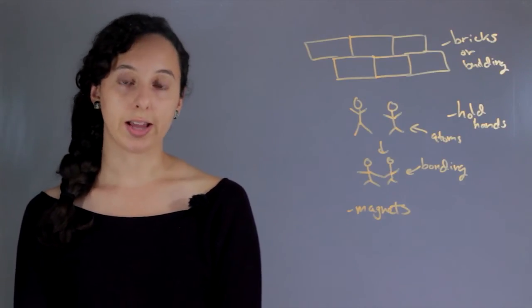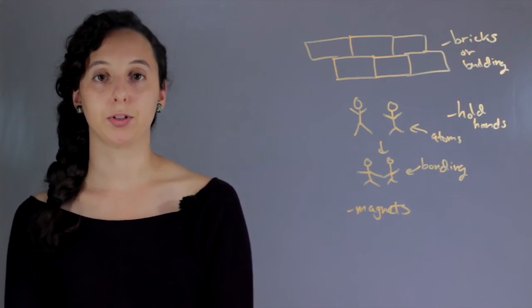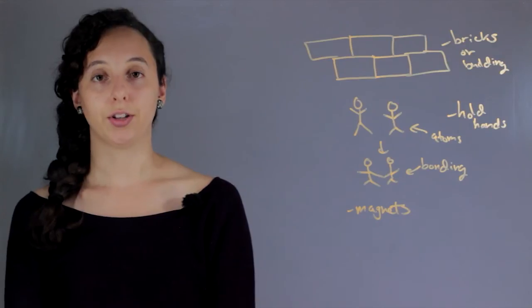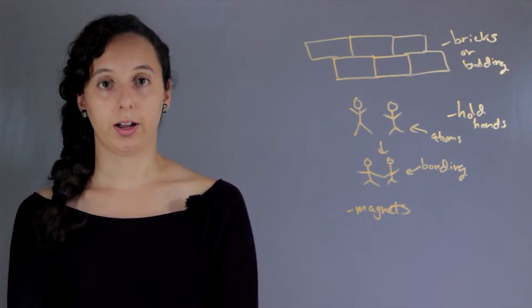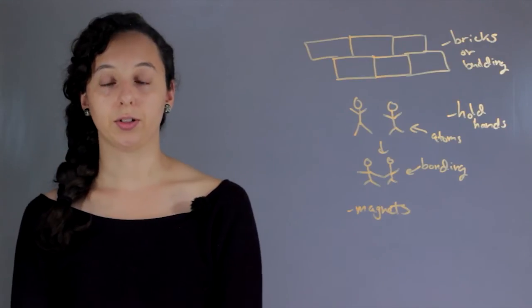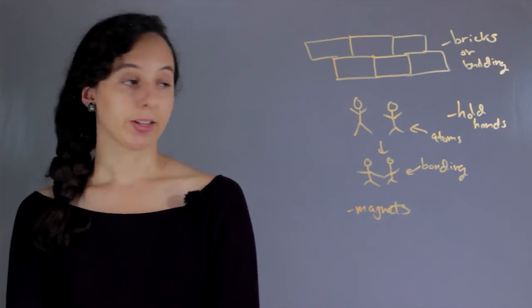And then this is even a little bit more complicated because sometimes they're repulsed by each other. And so you can say sometimes atoms are like that, and atoms only want to bond with certain other atoms at certain angles and not all of them will just do it all at once.